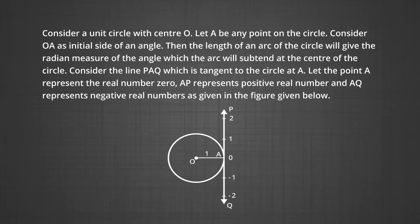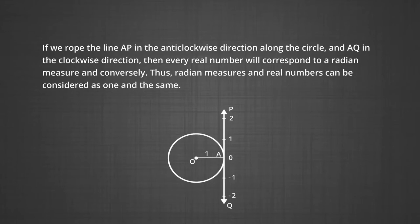Consider the line PAQ which is tangent to the circle at A. Let point A represent the real number 0. AP represents the positive real numbers and AQ represents the negative real numbers. Now, if we wrap the line AP in the anticlockwise direction along the circle and AQ in the clockwise direction, then every real number will correspond to the radian measure and conversely. Thus, radian measures and real numbers can be considered as one and the same.